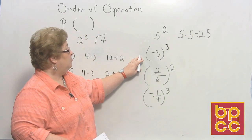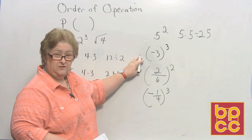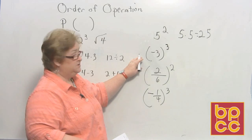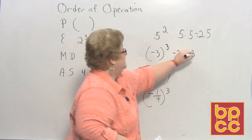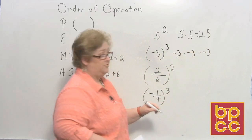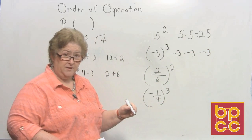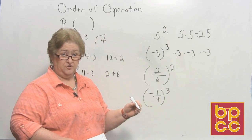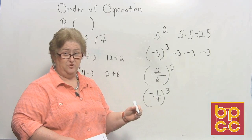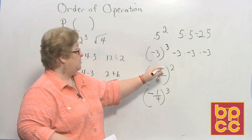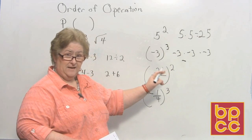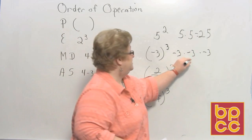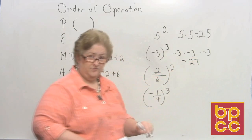And then on this one a negative 3 to the 3rd you know what that means. It means a negative 3 times a negative 3 times a negative 3. And you remember from multiplication and division of integers that when you have an odd number of negatives your answer will be negative. So I know it's going to be negative. 3 times 3 is 9. And 9 times 3 is 27. So the answer is a negative 27.